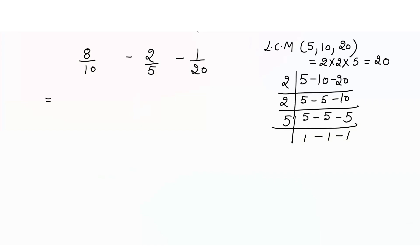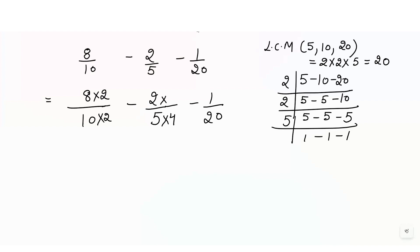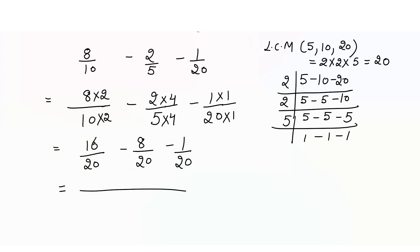Now we make all denominators equal to 20 by writing the fractions and multiplying. 10 × 2 gives 20, so multiply numerator by 2. 5 × 4 gives 20, so multiply numerator by 4. 20 × 1 gives 20. So we get 16 over 20 minus 8 over 20 minus 1 over 20. Writing denominator once: 16 minus 8 minus 1. 16 minus 8 is 8, minus 1 is 7 over 20. The answer is 7 over 20.